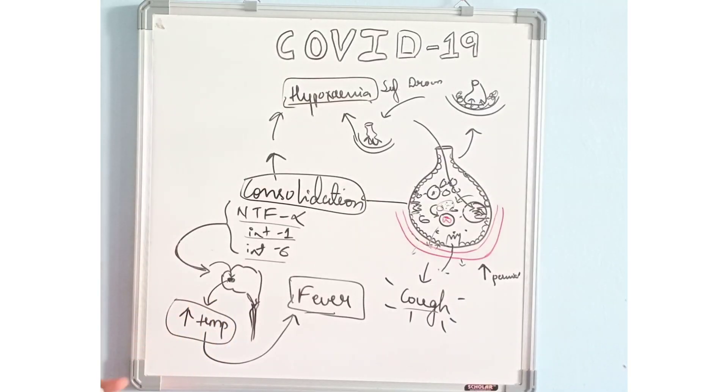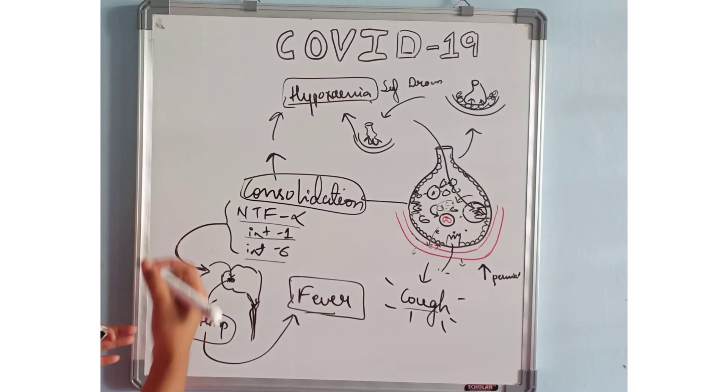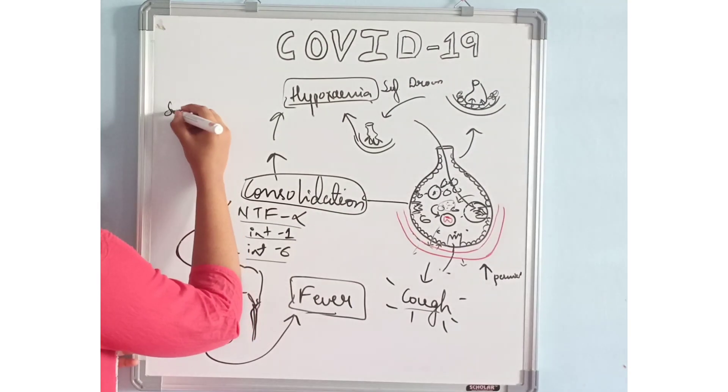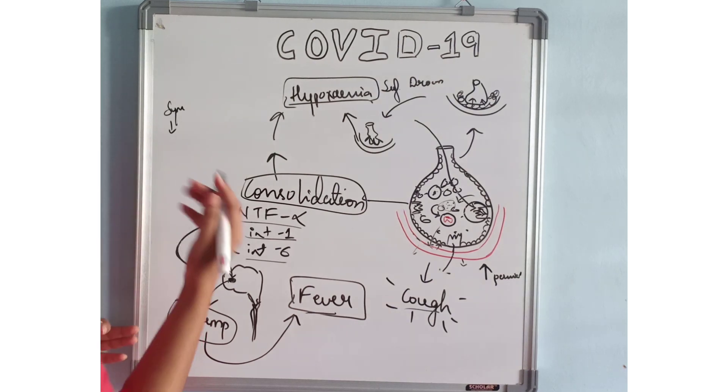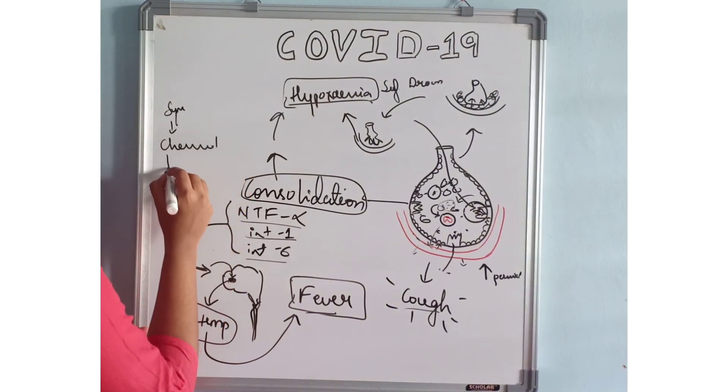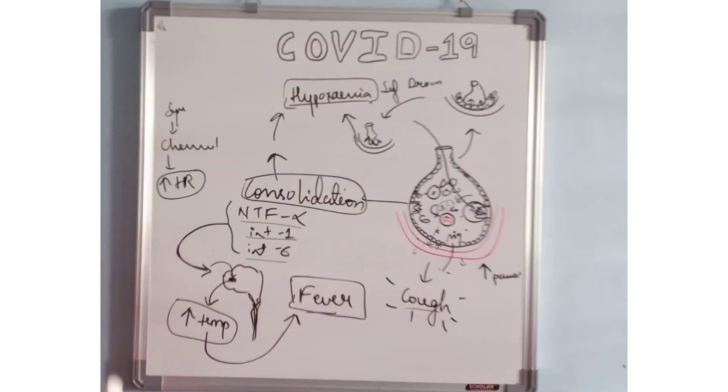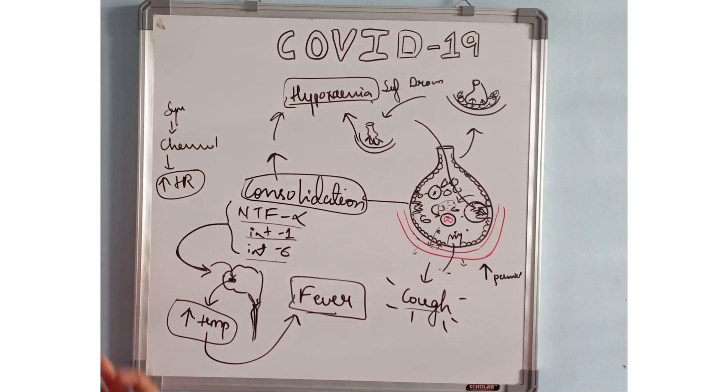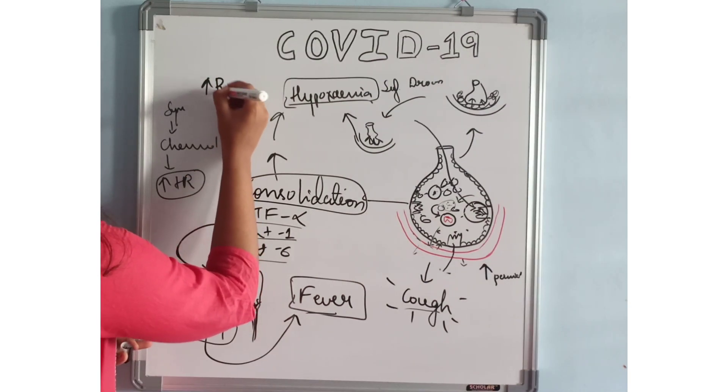Whenever this happens and there is hypoxemia, it triggers our sympathetic nervous system and causes chemoreceptor activation, which will lead to increased heart rate. As our body is not getting enough oxygen, it starts to increase the rate of respiration.